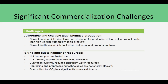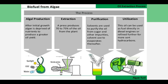So how do we scale this? Current commercial technologies are designed for production of high-value products rather than yielding large-scale amounts. How do we balance quality versus quantity? Nutrient recycling has limited its use currently, although they're working on techniques to improve this. Carbon dioxide delivery requirements are still limiting how fast this can grow. Cultivation requires significant water resources — it doesn't have to be super clean water, but we still need water for the algae to grow. The extraction, purification, and utilization processes still take time and money, though over time we will get more efficient as we refine the processes.